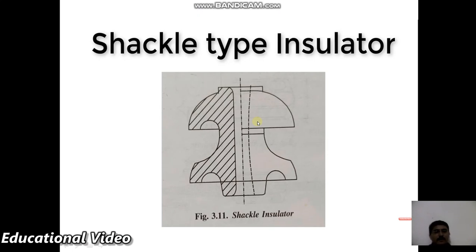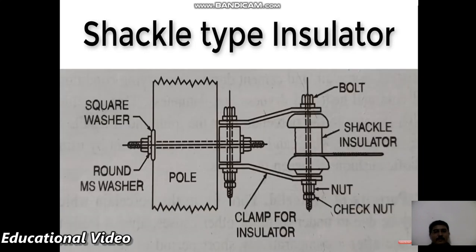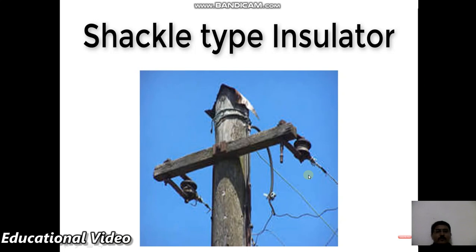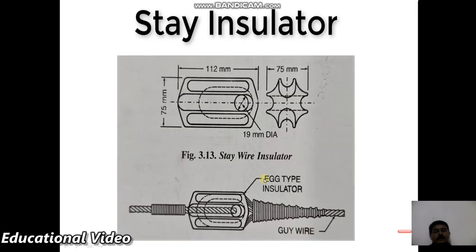The shackle type insulator is used where line termination is required. In its structure, a round MS washer and clamp are placed at the top of the pole, and the insulator is fixed using nuts and bolts. The figure shows how the shackle insulator is assembled and looks in practice.